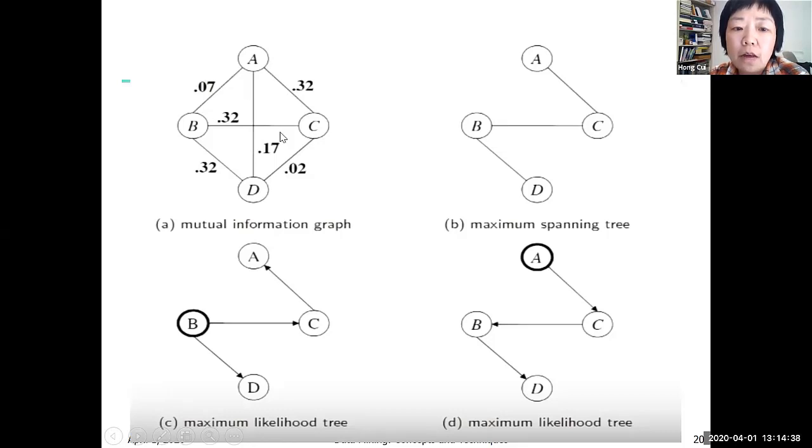And now we can actually, from here, build a maximum spanning tree. A maximum spanning tree is a tree that connects all the nodes using the edges with the greatest score. So in this case, we have 0.32 and 0.32 - those are the greatest values that connect all the nodes. Once we have this set of nodes connected, then we can...